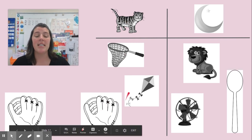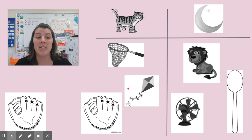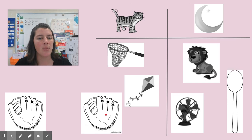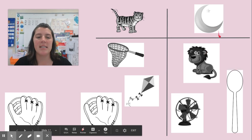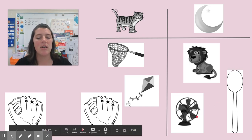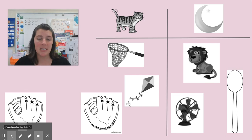Let's say the words in each column to see how they all sound the same at the end. We have cat, net, kite, mitt. What sound do we hear at the end of all those words? The t sound. Very good. Let's say this side: moon, lion, spoon, fan. What sound do you hear at the end of all of these words? I hear the n sound. Friends, you did an excellent job listening to those ending sounds today and helping me to sort words.